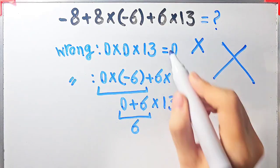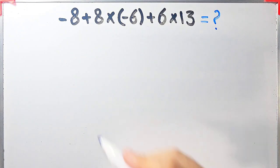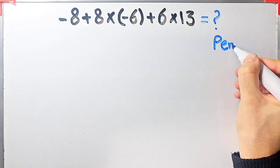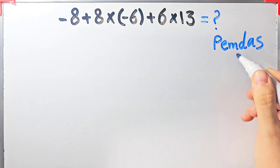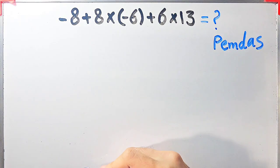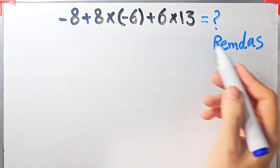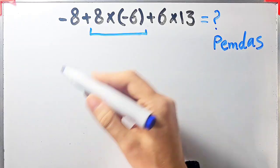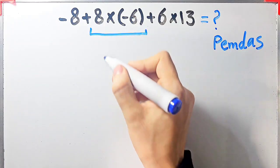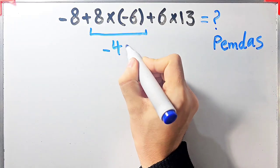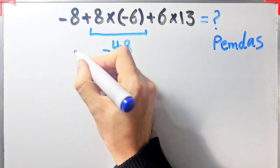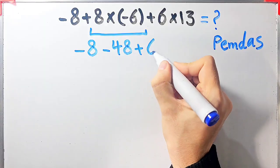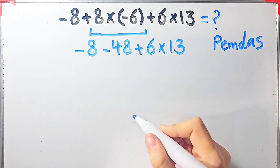Let's solve this question step by step. To solve this question we need to follow the order of operations which is PEMDAS. PEMDAS shows the priority of the mathematical operations, and if you don't pay attention to this rule you get the wrong answer. According to the PEMDAS rule, first we simplify the multiplication: 8 times negative 6 equals negative 48. Now the question is negative 8 minus 48 plus 6 then times 13.